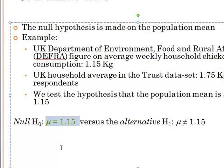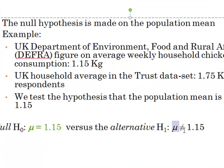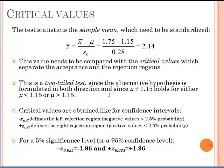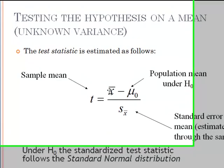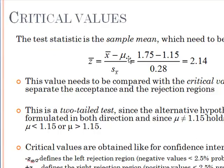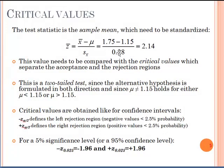The null hypothesis is that the average consumption of chicken is in fact 1.15 kilograms and the alternative hypothesis is that it's not 1.15, it could be higher or lower, and hence it's a two-tailed t-test. The observed value from the sample is 1.75 and the assumed population mean is 1.15 and we divide it by the standard error 0.28 and we get the z statistics 2.14.